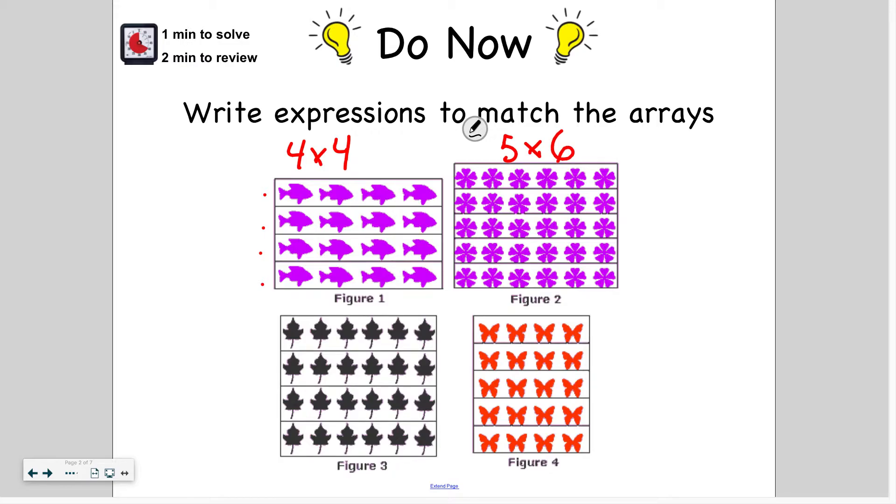For my black leaves here, I have four groups. One, two, three, four and there are six in each row. That means four times six.